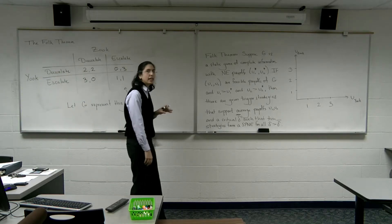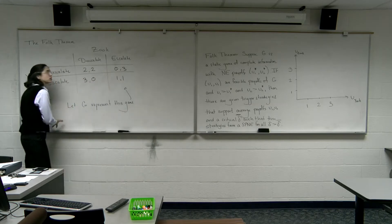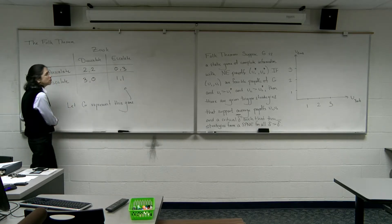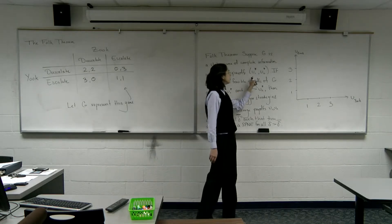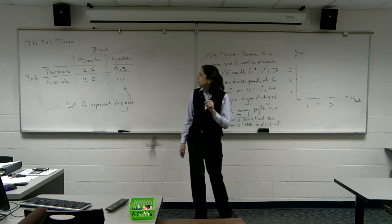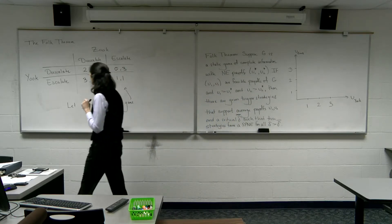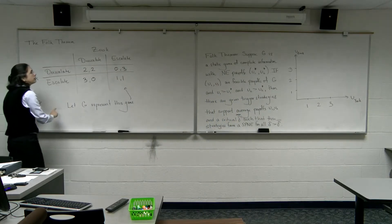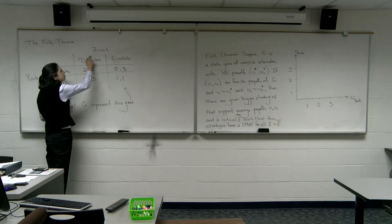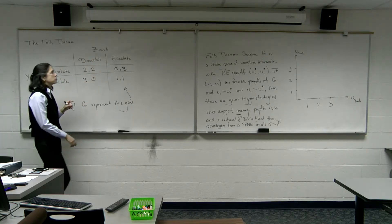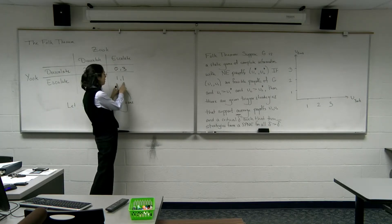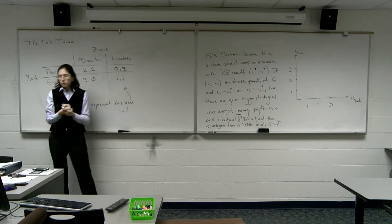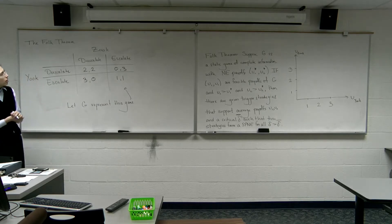Here's the statement: suppose g is a static game of complete information — here's our example, though it could be a different game. We let u1* and u2* be the Nash equilibrium payoffs, where Yuk is player one and Zuk is player two. In our game, escalate-escalate is the only Nash equilibrium, and the payoffs are one to each player, so u1* = 1 and u2* = 1.